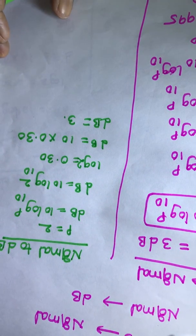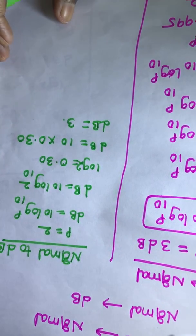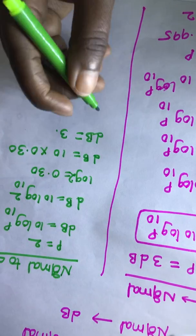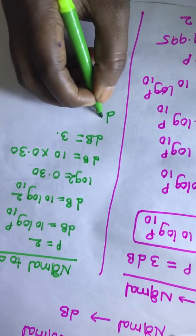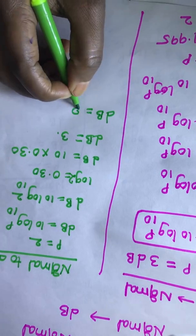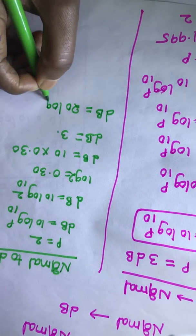If suppose they gave voltage gain then the formula will be dB is equal to 20 log P base 10.